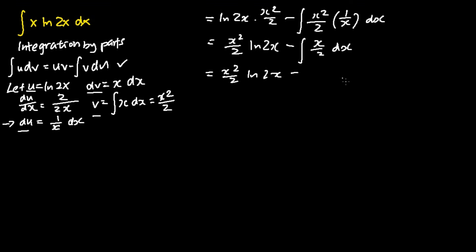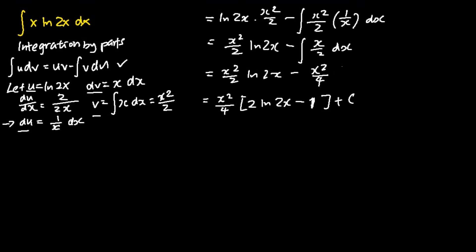The integral of x over 2 dx is basically just x squared over 4. The final step is to factorize, giving x squared over 4 times (2 ln 2x minus 1), plus c.